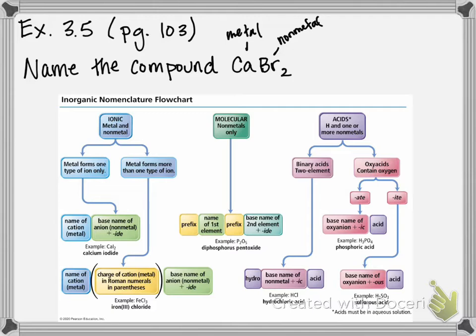Molecular are two or more non-metals. And acid, which we have yet to discuss, is hydrogen and another non-metal. So based on what we just identified, we have ourselves an ionic compound.